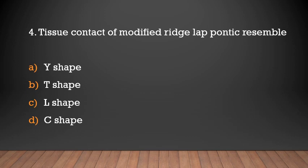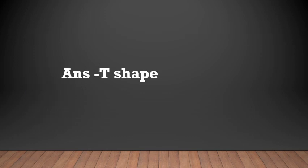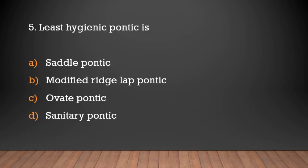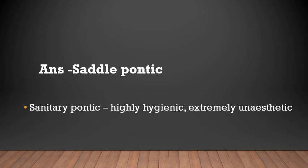The tissue contact of modified ridgeline pontic resembles which shape: Y-shape, T-shape, L-shape, or C-shape? The least hygienic pontic is the saddle pontic. The modified ridgeline pontic has a T-shape tissue contact. Saddle pontic is the least hygienic, and sanitary pontic is highly hygienic but extremely unaesthetic.